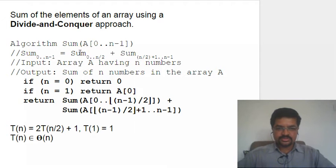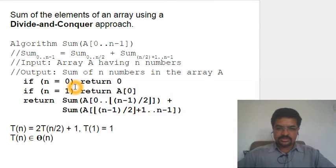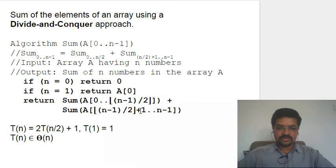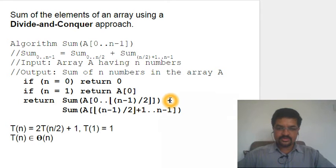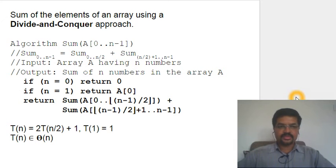How about solving it by divide and conquer? The idea is that the sum of n elements is the sum of the first n/2 elements plus the sum of the remaining n/2 elements. The base case is when n equals 0, the sum is 0; when n equals 1, the element itself is the sum. The time complexity is T(n) = 2·T(n/2) + 1, because of the two recursive calls. When solved, this also belongs to Θ(n), so this method is no better than brute force.